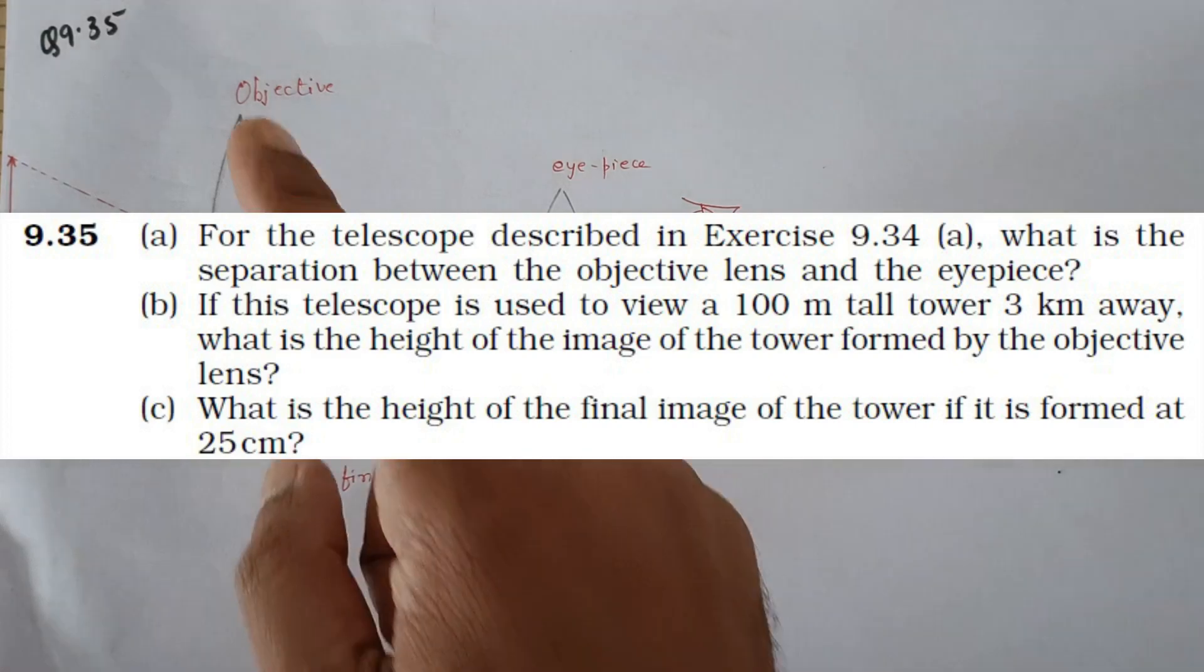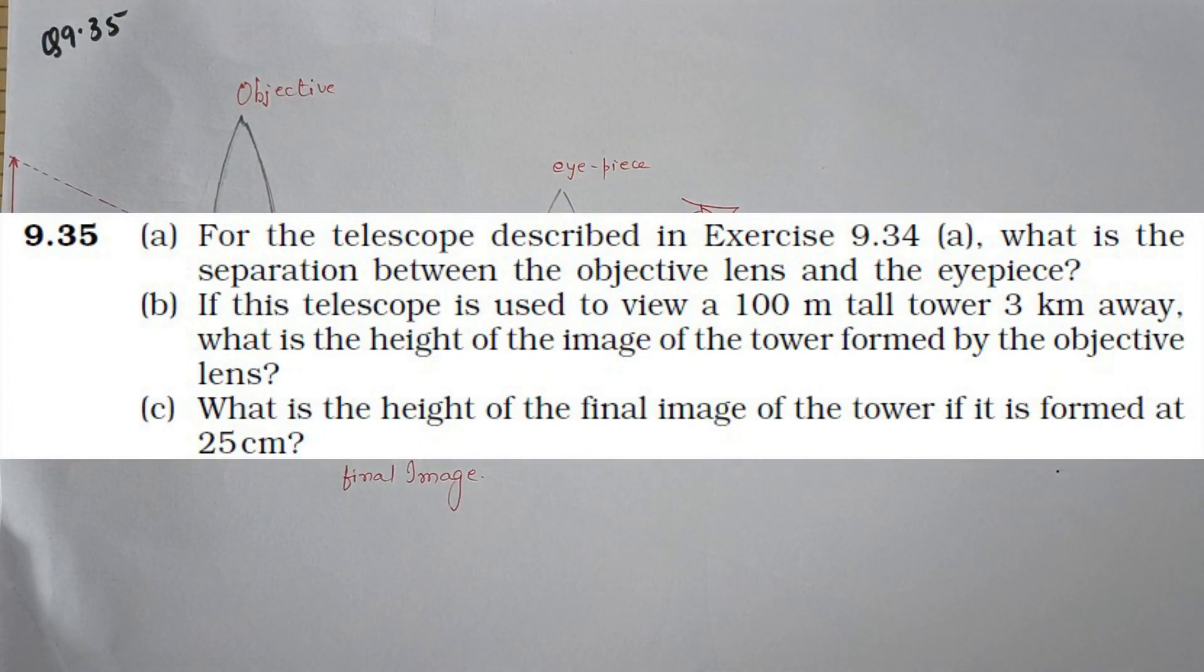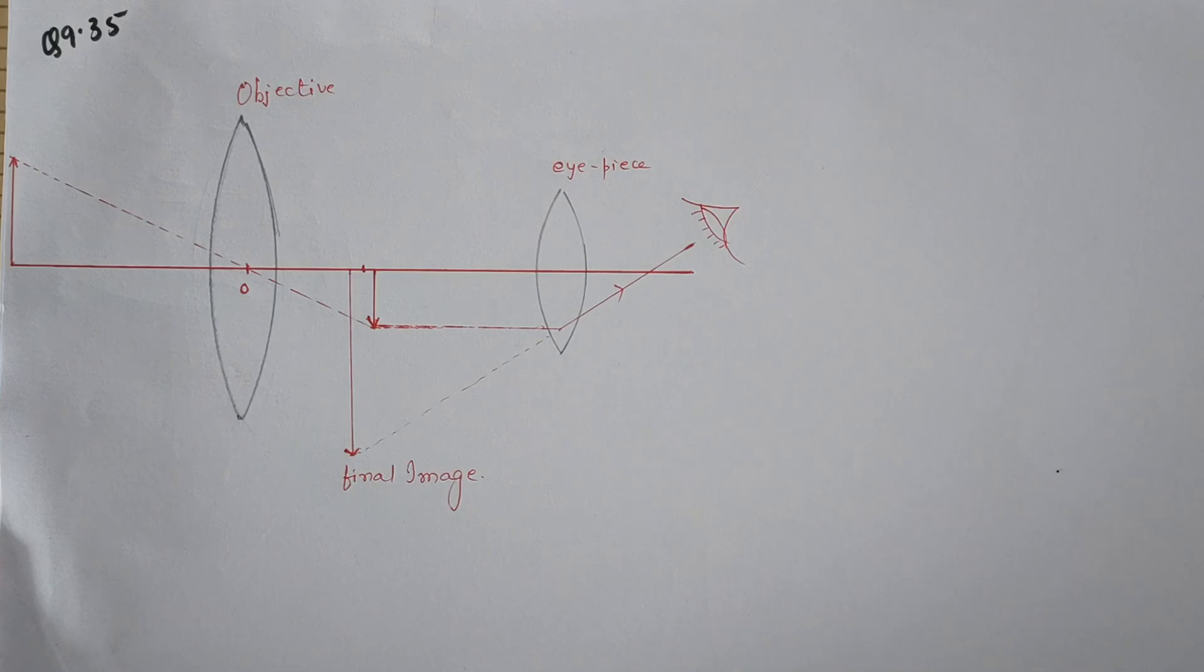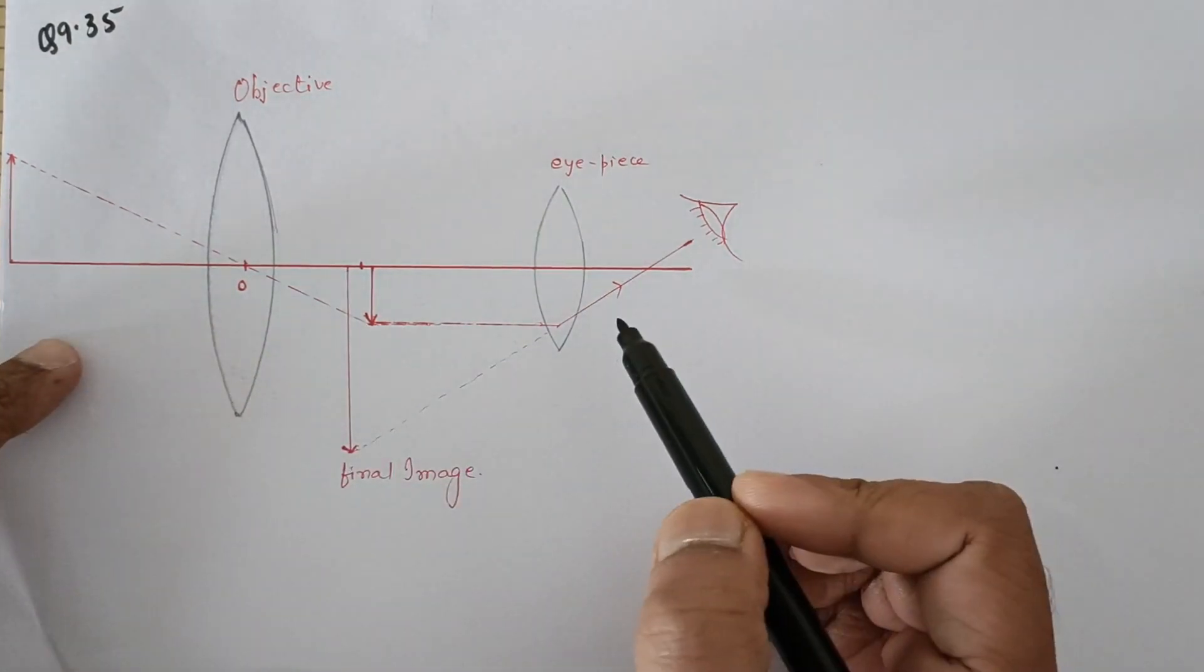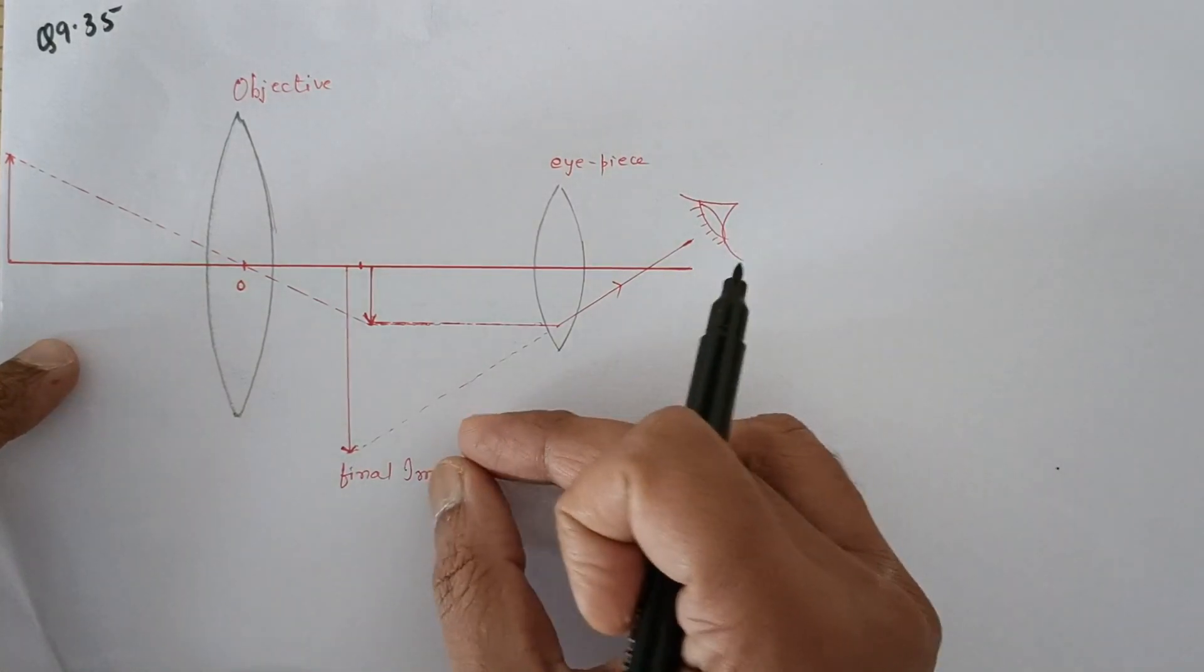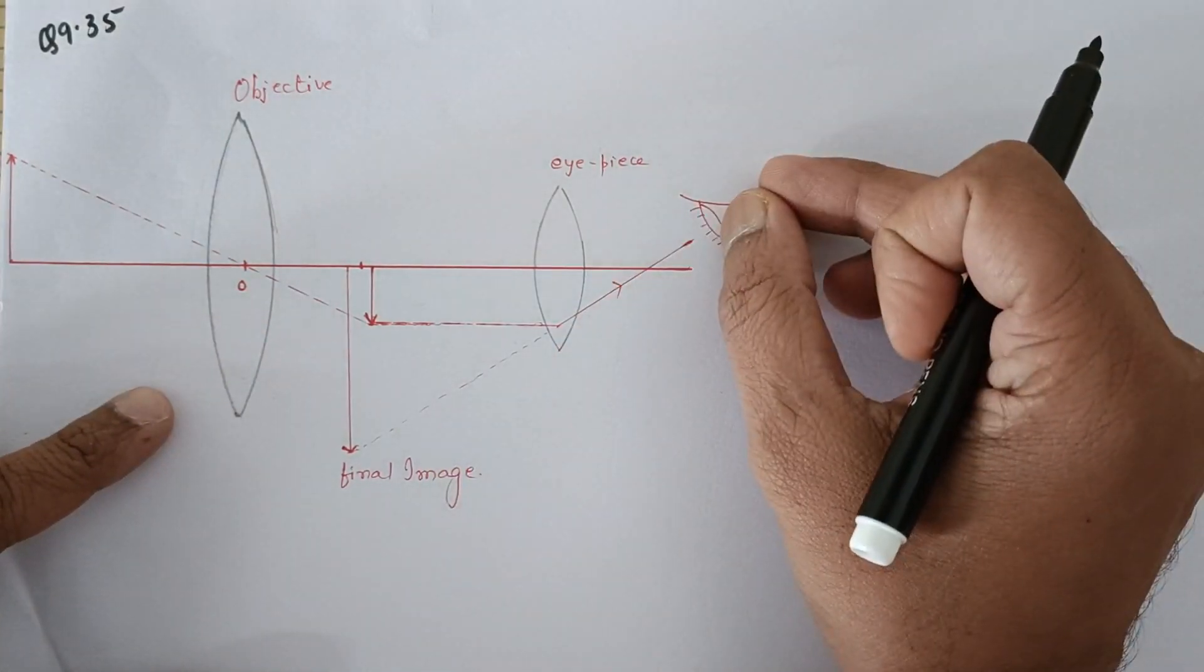Hello all, in this video I am going to solve problem number 9.35 ray optics, standard 12 physics NCERT textbook. We are given a telescope and I am going to solve part C first, then B, then I am going to come to A.